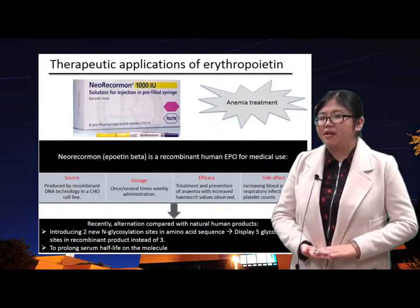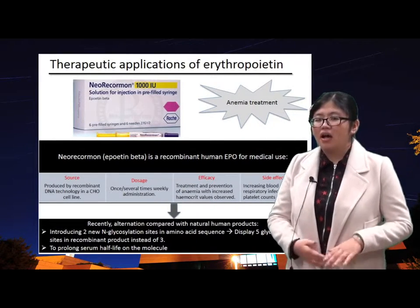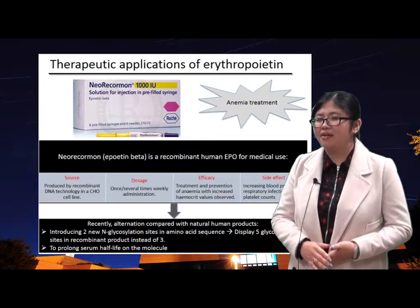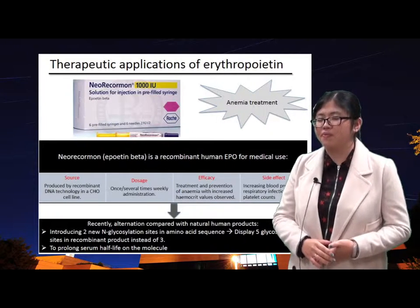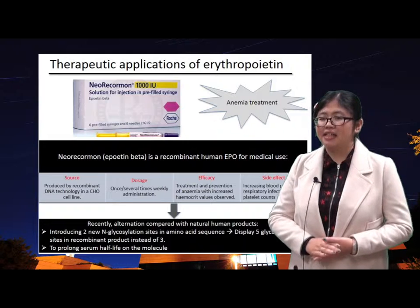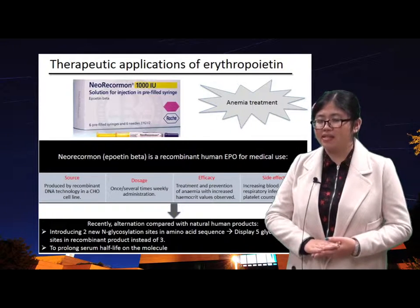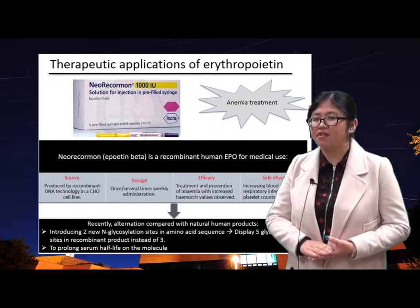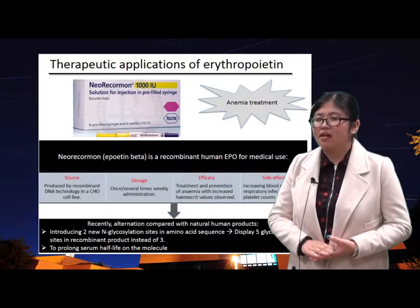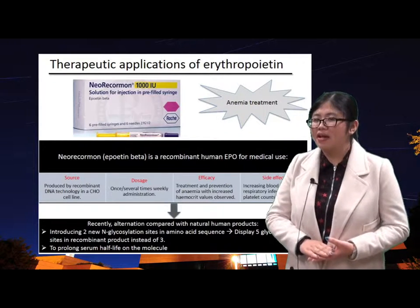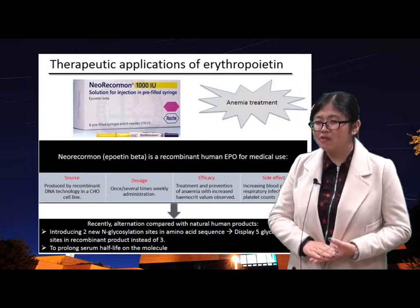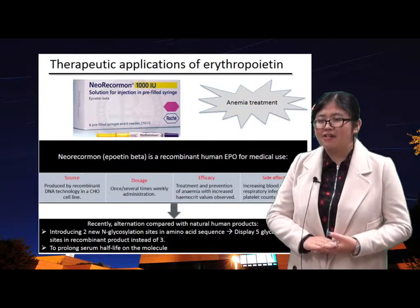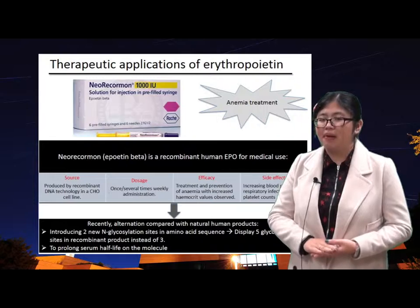Erythropoietin is a therapeutic target to treat anemia. The product name is NeoRecormon, also called epoetin beta, which is a recombinant human EPO for medical use. It is produced by recombinant DNA technologies in a CHO cell line. Doctors usually prescribe NeoRecormon with once or up to seven times weekly administration. It helps with treatment and prevention of anemia, which increases hemoglobin values. However, there are some side effects such as increasing blood pressure, respiratory infections, or an increase in the number of platelets.